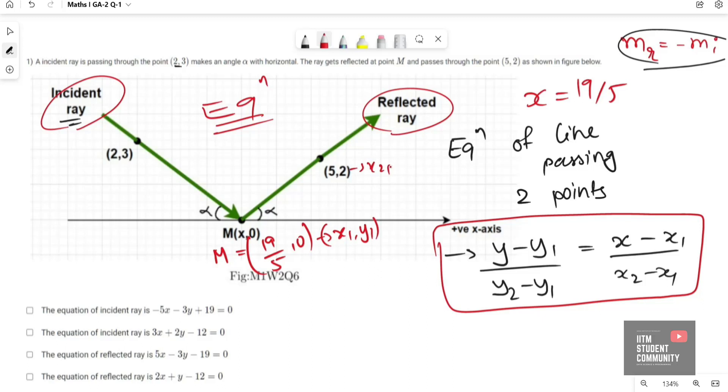Let us first find the equation of reflected ray using M point as (x1, y1) and (5,2) as (x2, y2). Putting x1, y1 and x2, y2 in the equation.